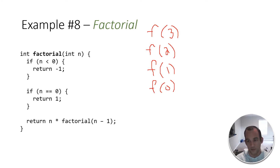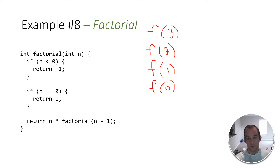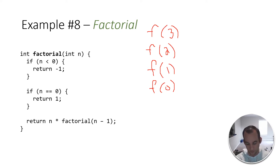Now n is zero. Zero is not less than zero, but zero does equal zero. So that means we return one. There hasn't really been any computation yet in recursion — we're just going through the algorithm. But now that we've hit the base case — if n equals zero, return one — we hit that base case.